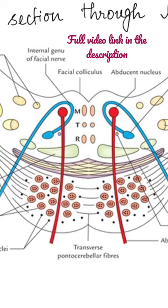The longitudinal bundles of fibers include the corticopontine, the corticonuclear, and the corticospinal fibers.